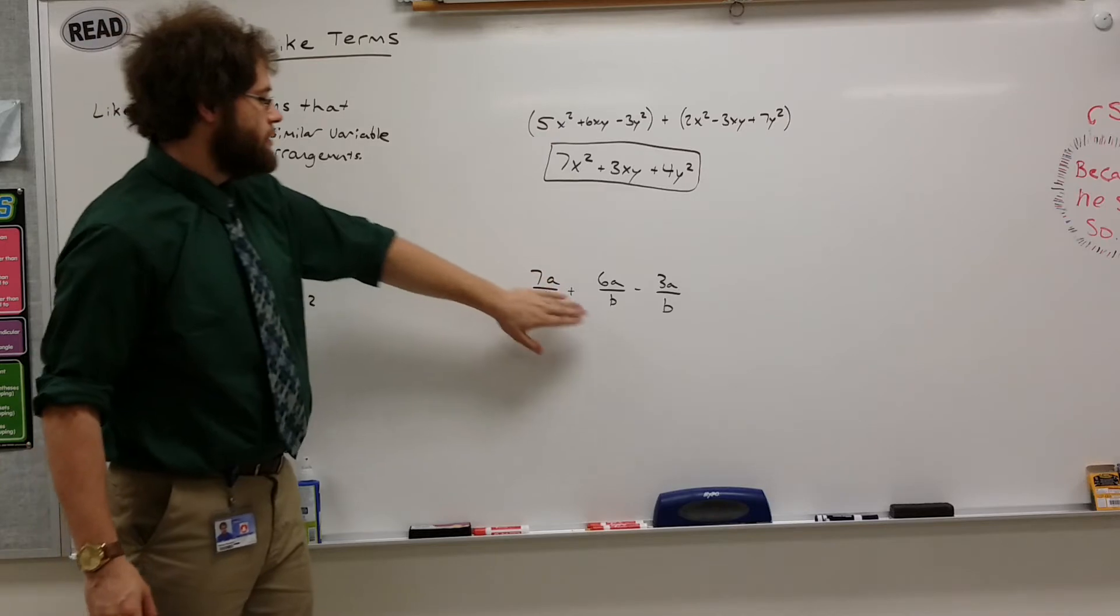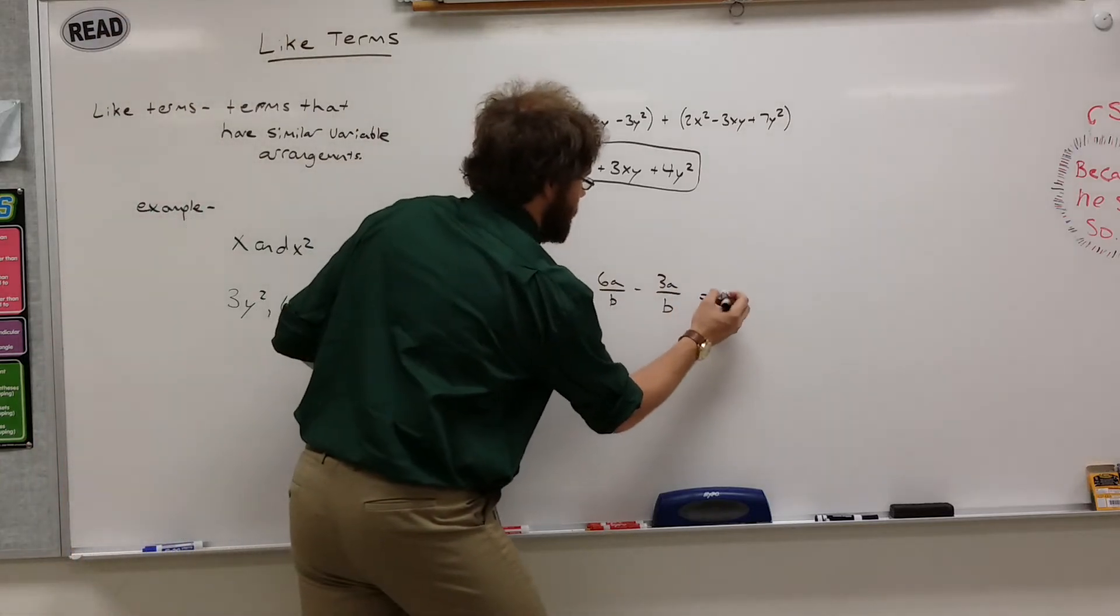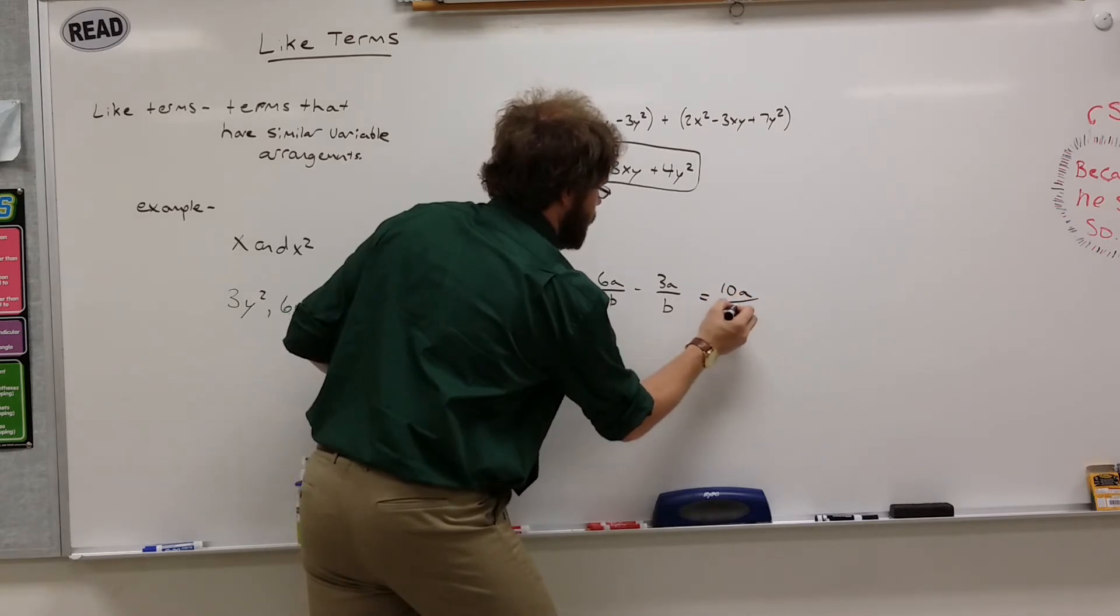7a over b plus 6a over b is 13a over b minus 3a over b. That's 10a over b.